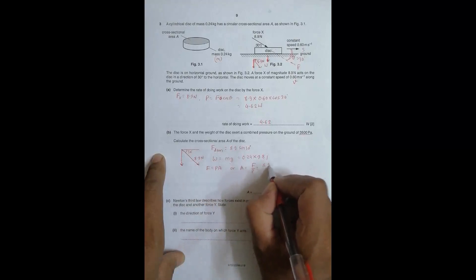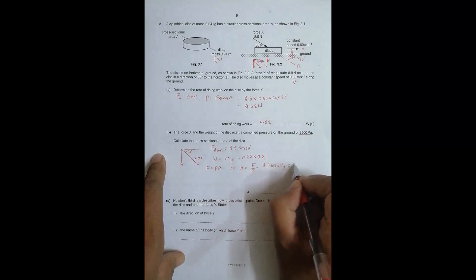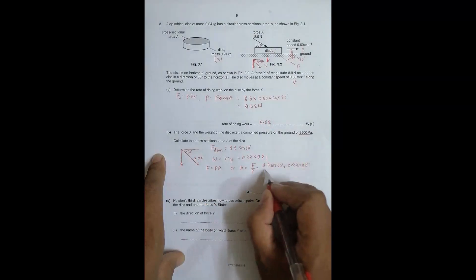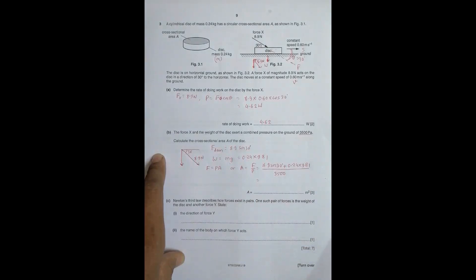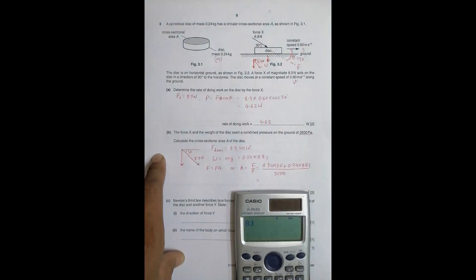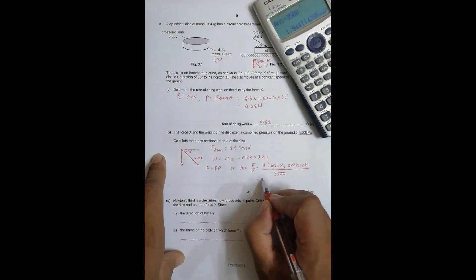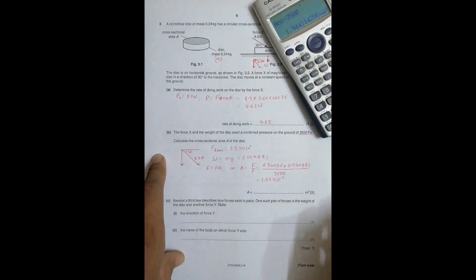So (8.9 sin 30° + 0.24 × 9.81) / 3500. First we have 8.9 × sin 30, plus 0.24 × 9.81, whole divided by 3500. So the cross-sectional area = 1.94 × 10⁻³ m².